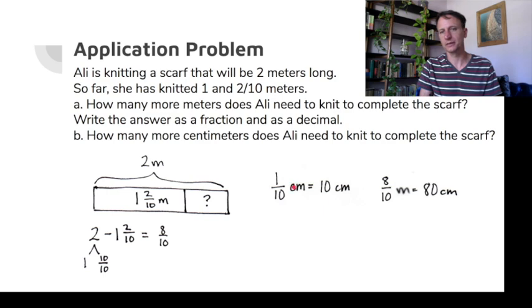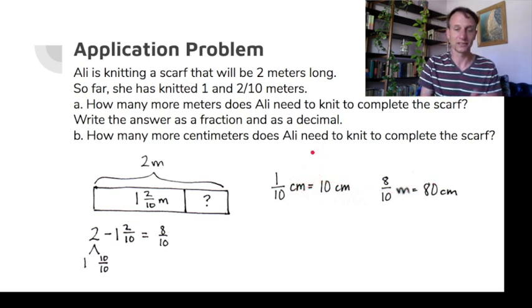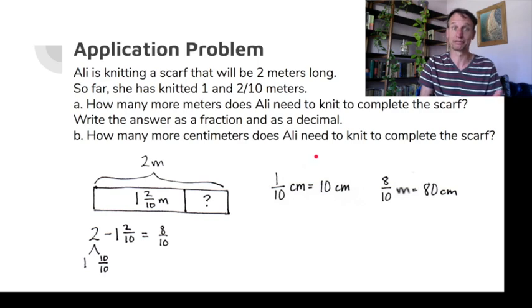We know that one tenth of a meter. And that's not my mistake. I copied that from Eureka, but it's my mistake in missing it. So I'm catching it now. I'm crossing out that C. It should say one tenth of a meter is ten centimeters. Therefore, eight tenths of a meter is 80 centimeters.